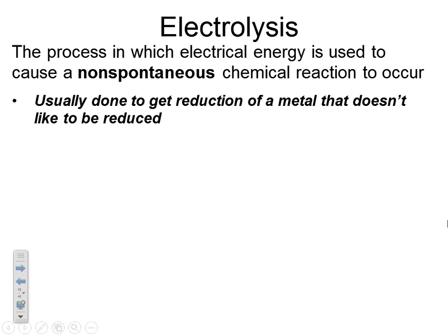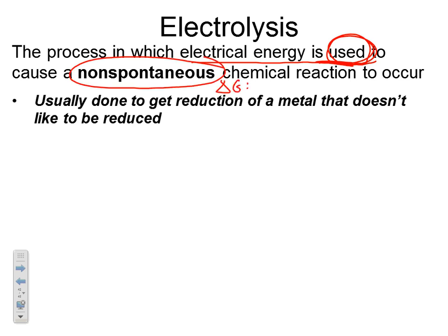A voltaic cell produces voltage — it produces electricity. An electrolytic cell uses electricity to get something that's non-spontaneous to happen. We're not forming electrical energy; we're using electrical energy. This is a non-spontaneous reaction, so all of our positive delta G processes would be helped along by an electrolytic cell. Because delta G is positive, we know that E for this process must be negative.